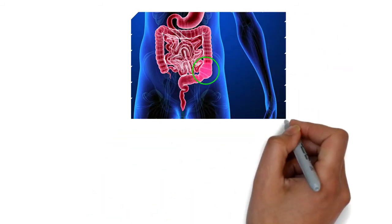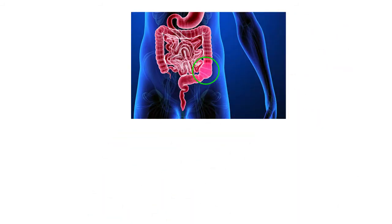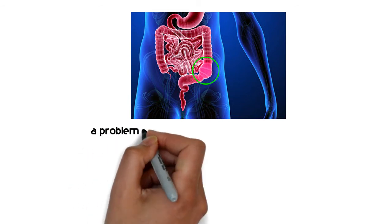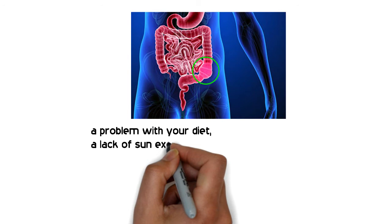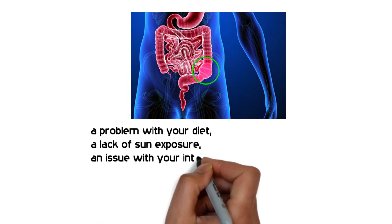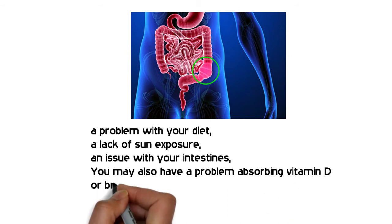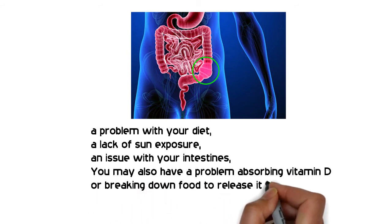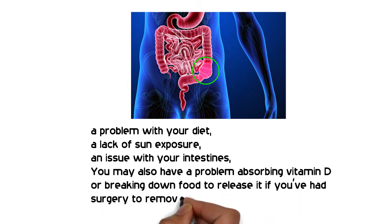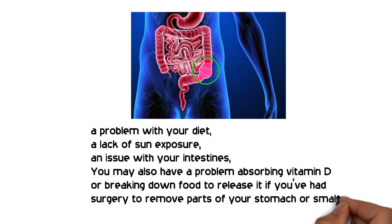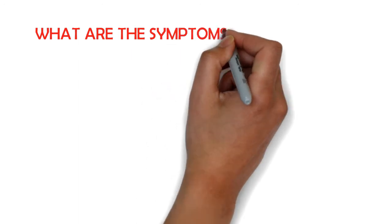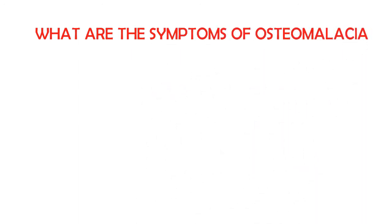Vitamin D can also be absorbed from foods like dairy products and fish. Your body can't process the calcium your bones need to stay strong if you have low levels of vitamin D. A vitamin D deficiency can result from a problem with your diet, a lack of sun exposure, or an issue with your intestines. You may also have a problem absorbing vitamin D or breaking down food to release it if you've had surgery to remove parts of your stomach or small intestine.